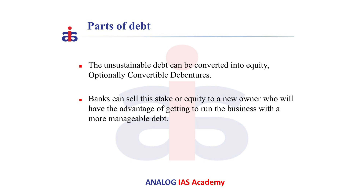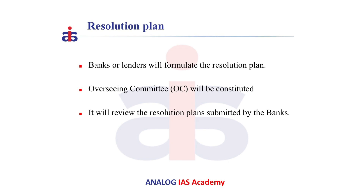The unsustainable debt can be converted into equity, optionally convertible debentures, or redeemable optionally convertible preference shares, with clearly spelt out terms. Banks can also sell the stake or equity to a new owner, who will have the advantage of running the business with a more manageable debt.